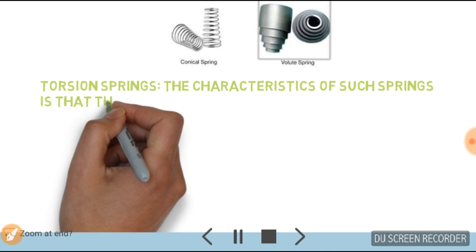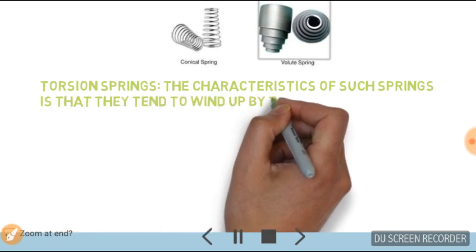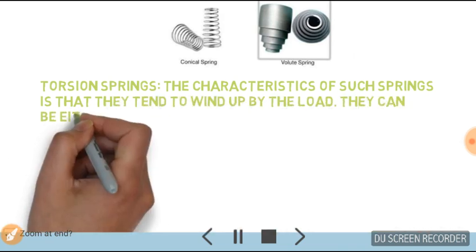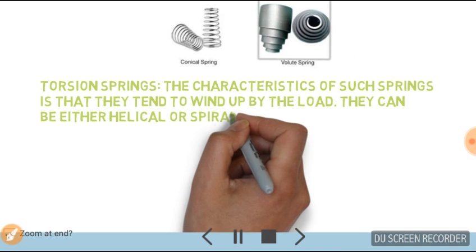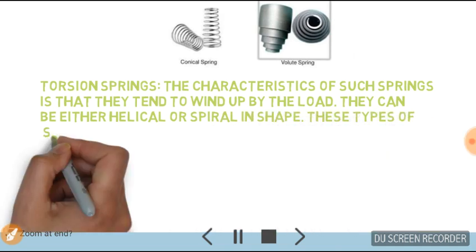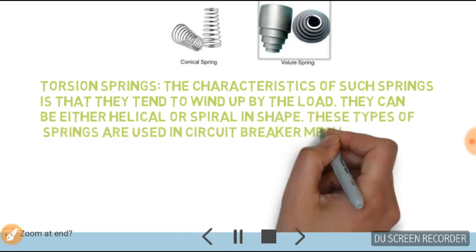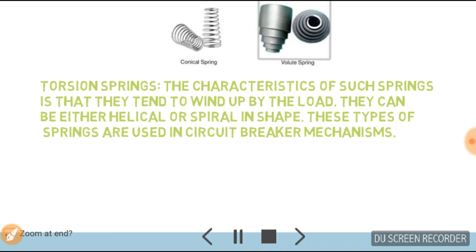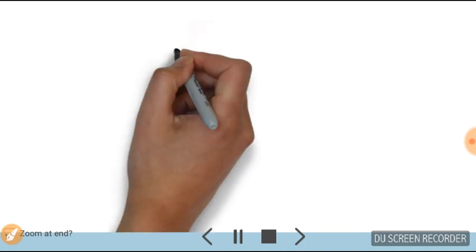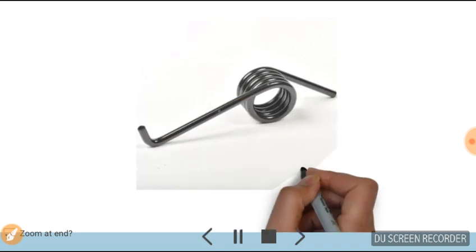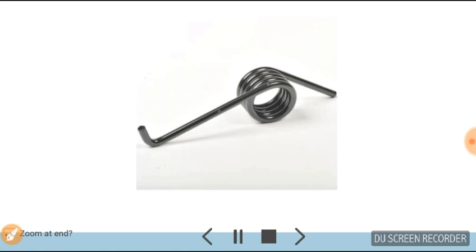Torsional springs have the characteristic that they tend to wind up by the load. They can be either helical or spiral in shape. This type of spring is used in circuit breaker mechanisms. This is an example or diagram of a torsional spring.